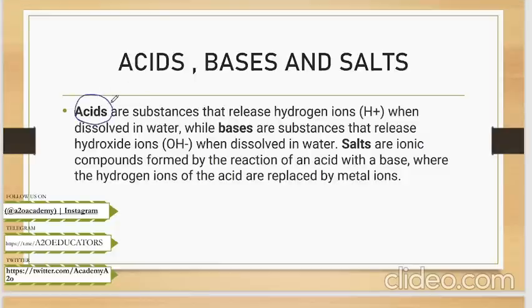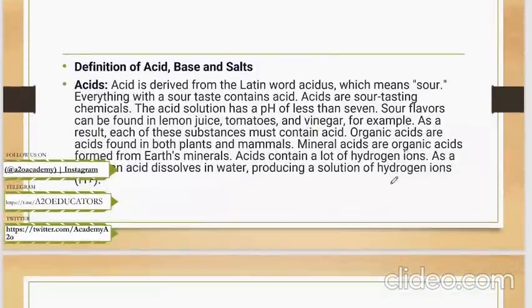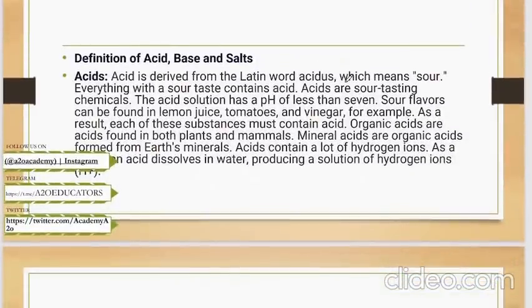Acids are substances that release H positive ions when dissolved in water. Bases are substances that release hydroxide ions, OH negative, when dissolved in water. Salts are ionic compounds. When acids and bases react with each other, salts are formed. Hydrogen ions of an acid are replaced by metal ions. Let's see acids, bases and salts separately and in detail.